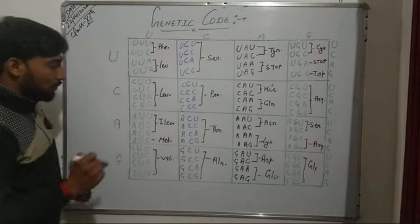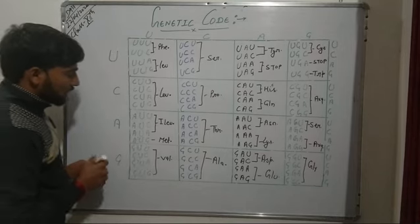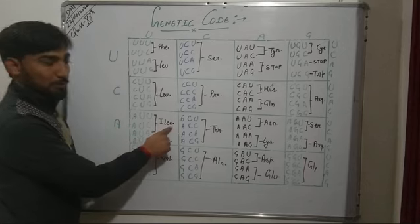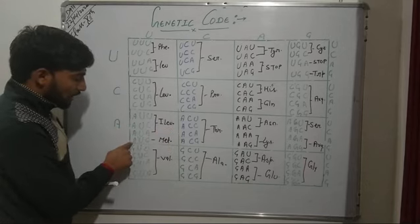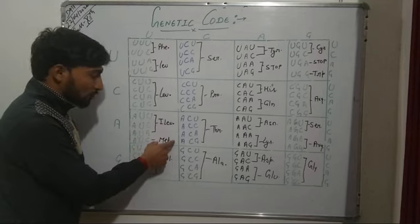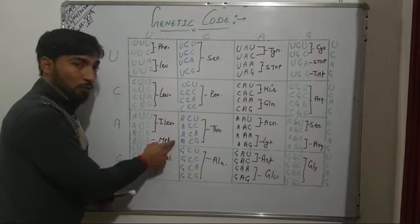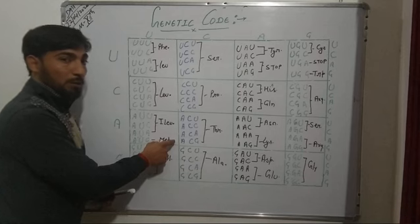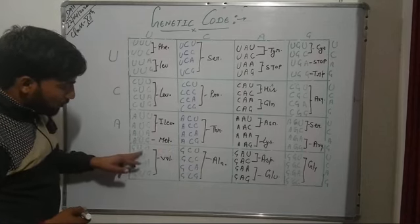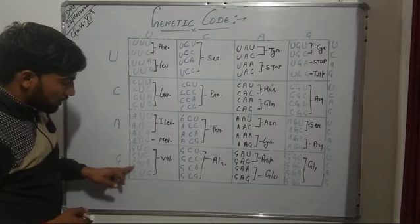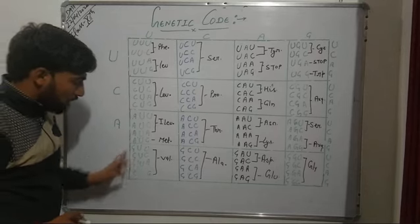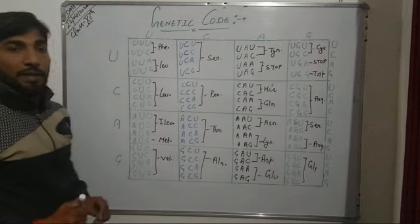These call for two different amino acids — the first three codons call for isoleucine, and the fourth codon AUG calls for methionine. And this methionine is the start codon for any polypeptide or protein chain. In the next column, GUU, GUC, GUA, and GUG all call for valine.